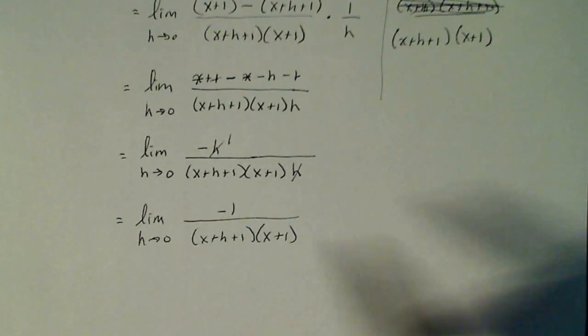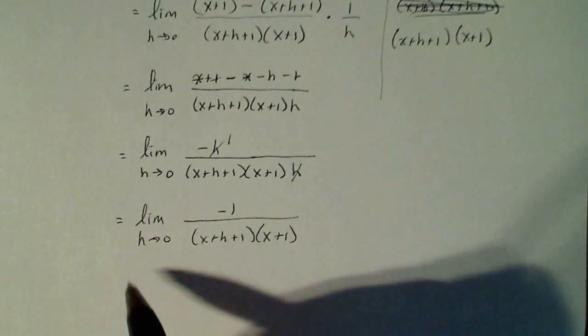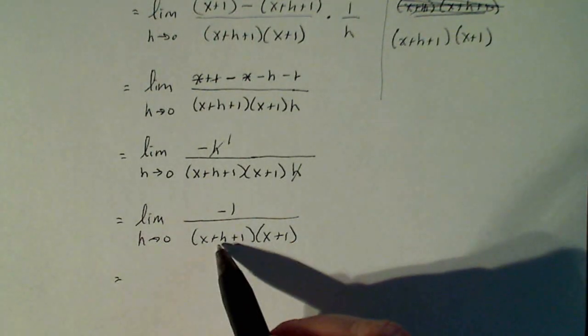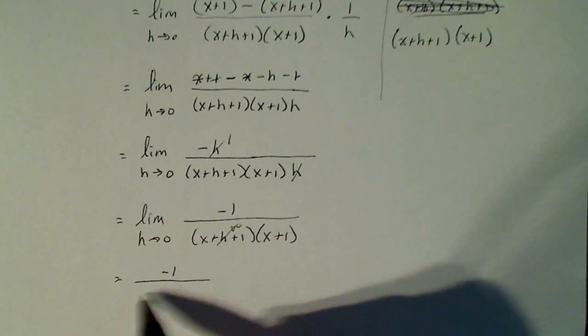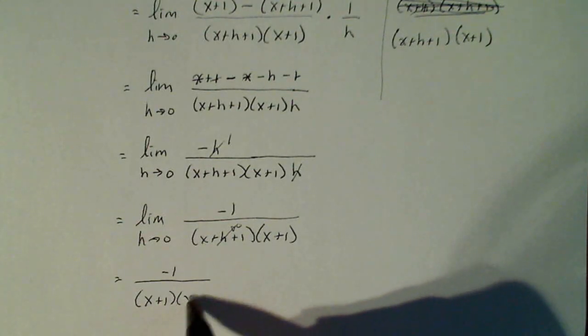Now I think if I plug in zero for h, I get my derivative. So I plug in zero for h, this guy goes to zero. So I'm left with -1 divided by (x+1) times (x+1).